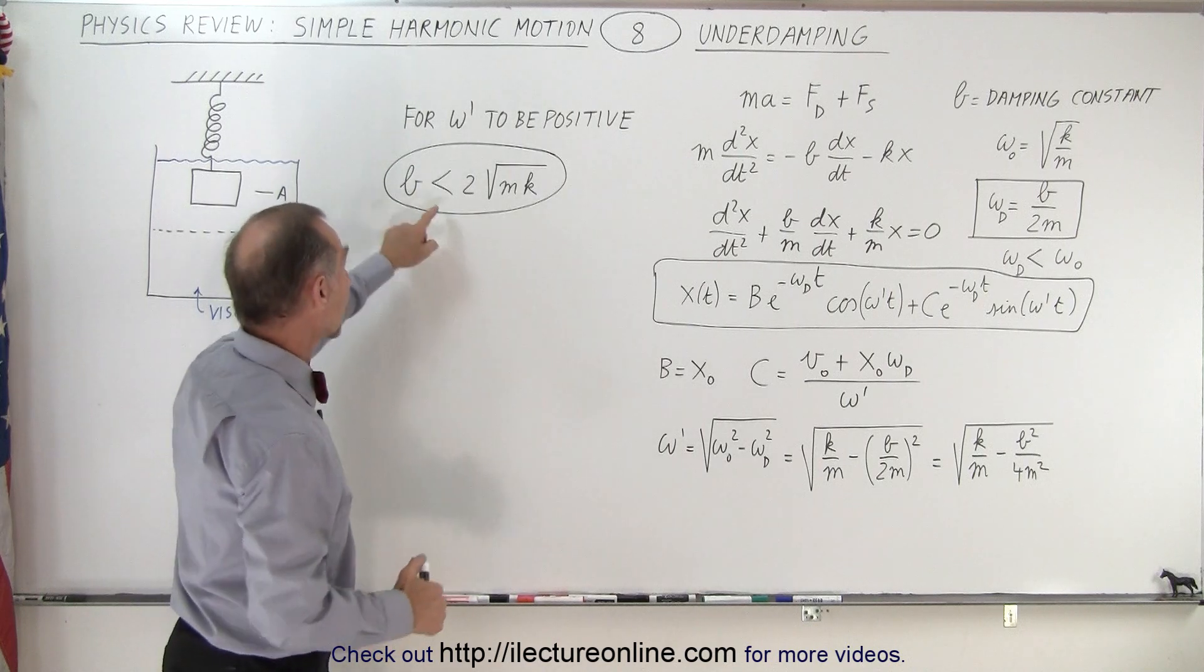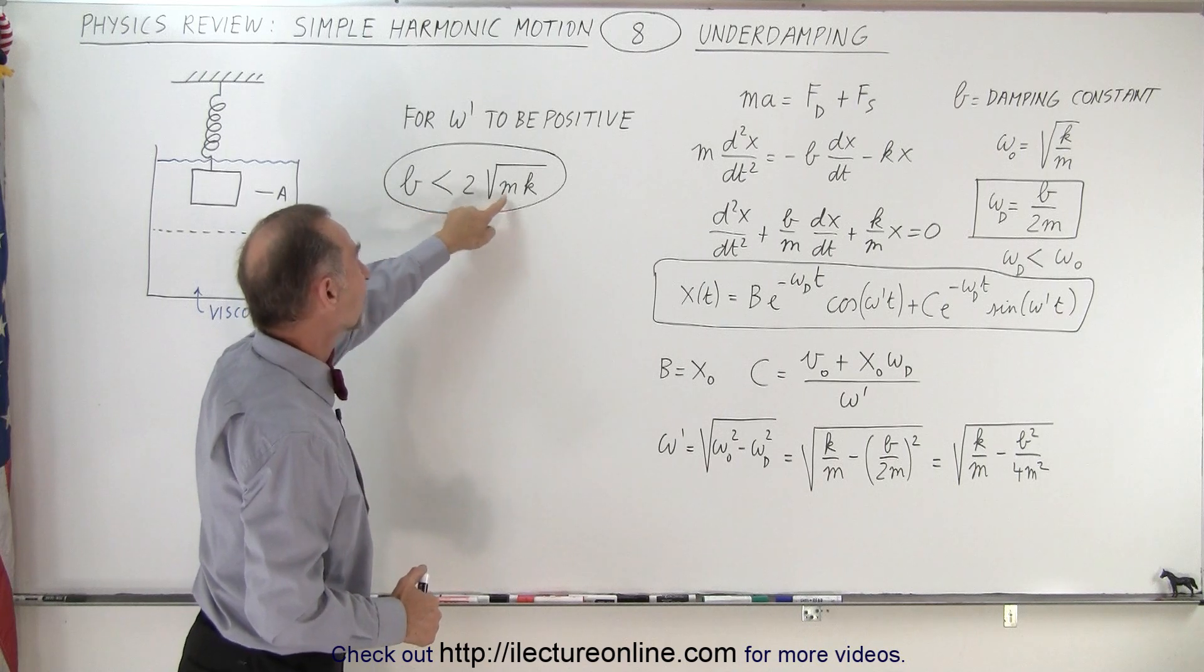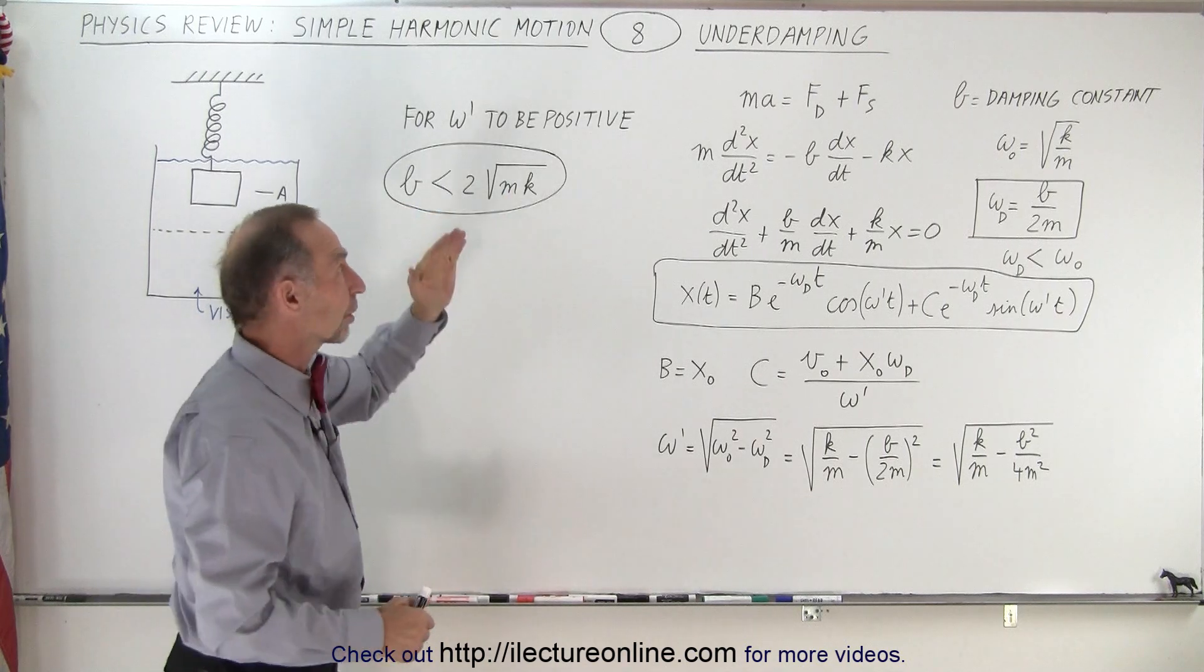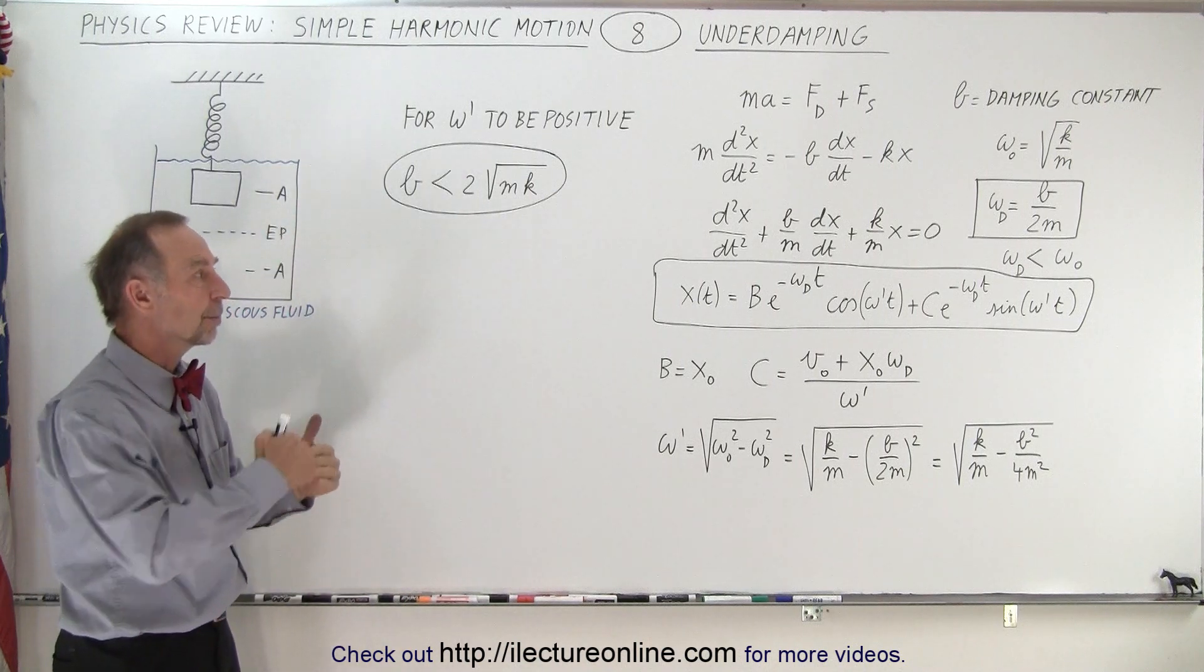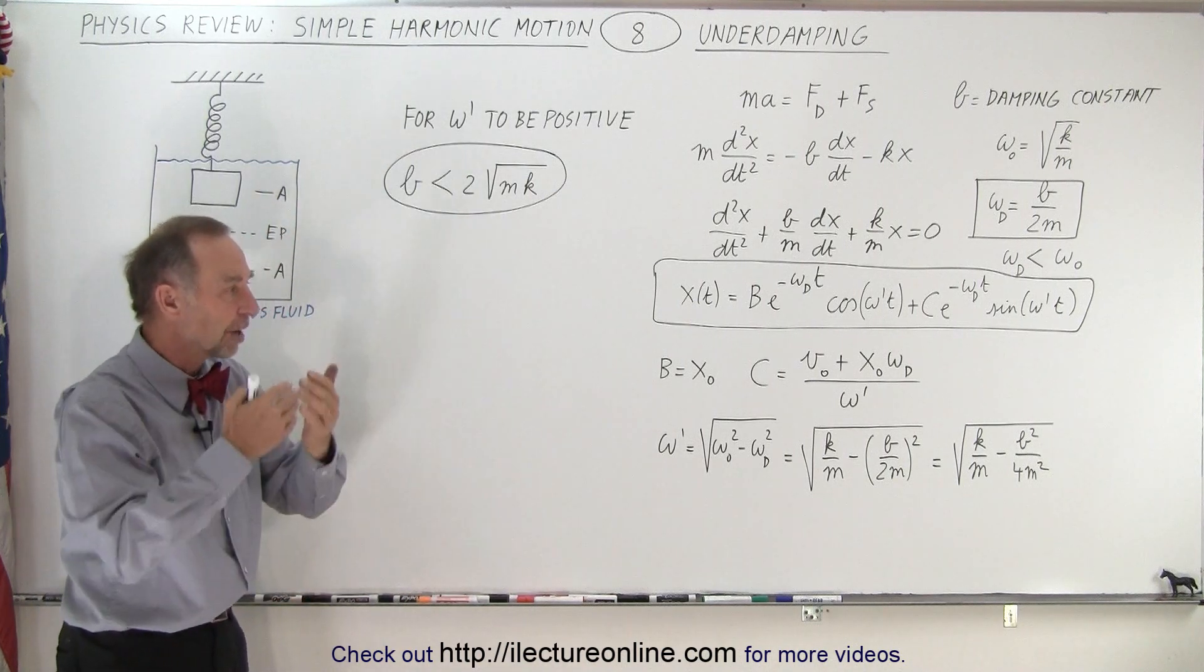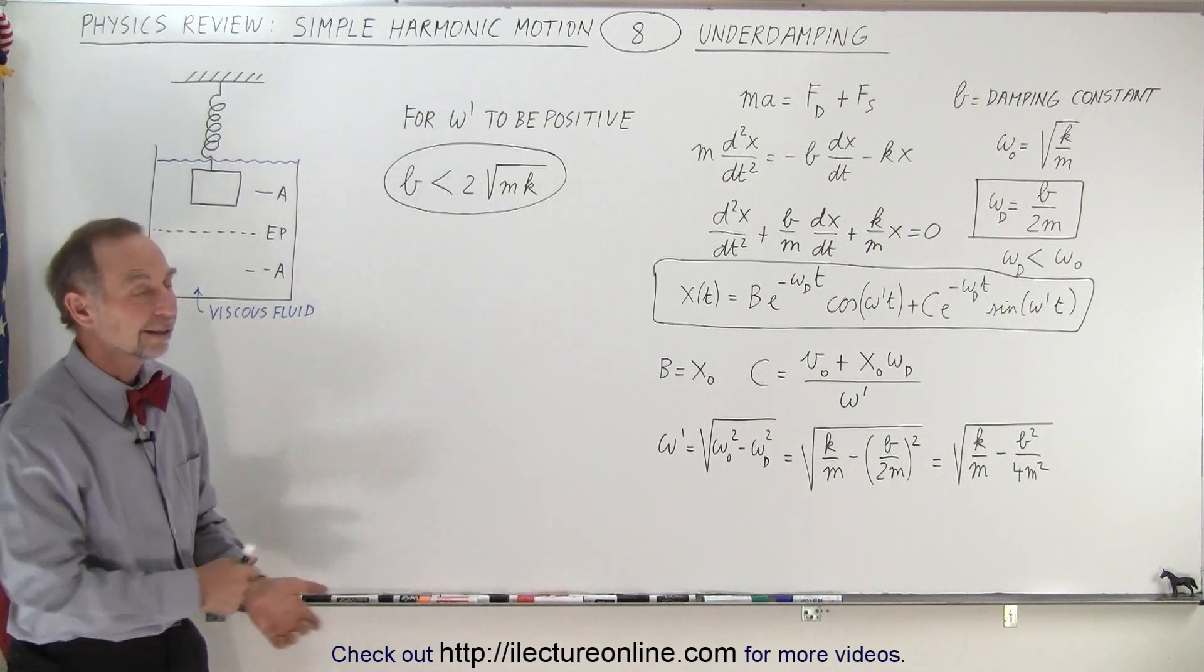All this works as long as this is true: B must be smaller than two times the square root of M times K, or we no longer have what we call underdamping. So there's a limit to how much friction you can have, how much opposition to motion before it's no longer underdamping, and that is how it's done.